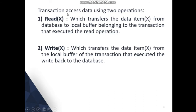A transaction accesses data using two operations: read and write. Read X means it transfers the data item X from the database to the local buffer belonging to the transaction that executes the read operation. In other words, we fetch a particular value from the database — where variables and their values are stored — and store it in the local buffer.